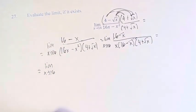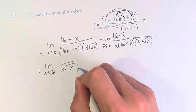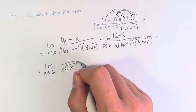And we have the limit as x approaches 16 of 1 over x times the square root of x plus 4. I rewrote them backwards, but it doesn't really matter.